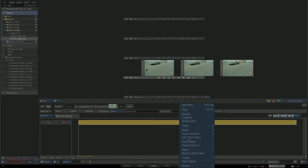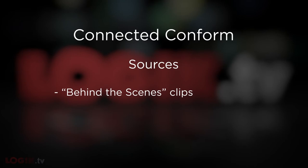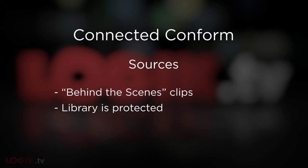Understanding sources this way is at the foundation of the Connected Conform workflow because a lot of things hinge on these behind-the-scenes sources. It's also very much worth mentioning that the library acts as a protected space. Anything that you put into the library is protected from anything that you do to those same clips on the desktop. You can use this to your advantage by saving your work at different stages of your conform without worrying about messing up any of the connections that you've made.